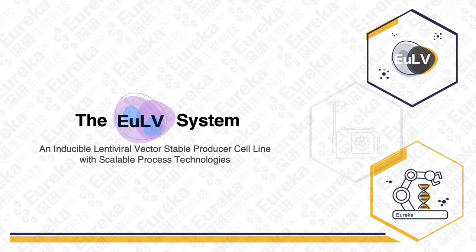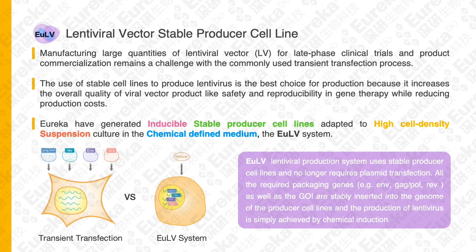In today's presentation, we are honored to introduce our answer to the challenges just mentioned. We name it the EULV system — an inducible lentiviral vector stable producer cell line with scalable process technologies. Generally speaking, the EULV system is an inducible stable producer cell line adapted to high cell density suspension culture in chemically defined medium.